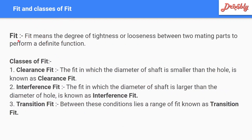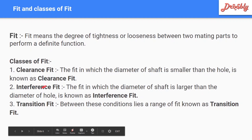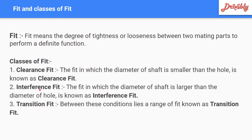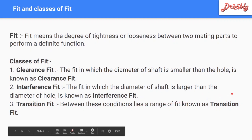Third topic is fits and classes of fits. Fit means the degree of tightness and looseness between two mating parts. If the shaft diameter is smaller than the hole diameter, it is called a clearance fit. If the shaft diameter is larger than the hole diameter, it is called an interference fit. A transition fit is where both clearance and interference are possible within a defined range.